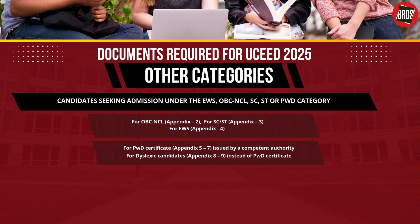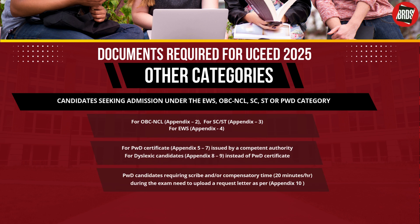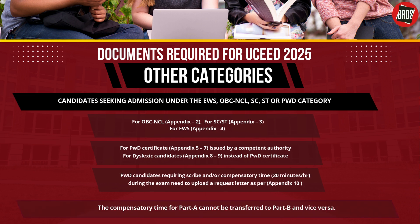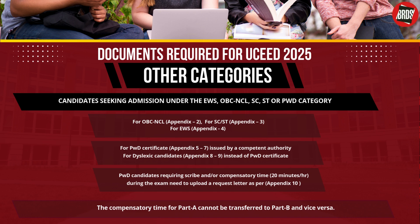Dyslexic candidates must refer to Appendix 8 and 9 instead of the PWD certificate. PWD candidates requiring a scribe and/or compensatory time during the exam need to upload a request letter — please refer to Appendix 10. The compensatory time is 20 minutes per hour. The compensatory time for Part A cannot be transferred to Part B and vice versa. Appendix formats are given along with the UCED 2025 information brochure; students are requested to check them before uploading in the final application.